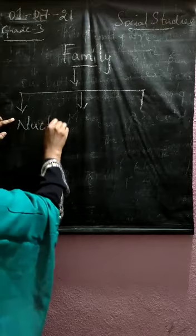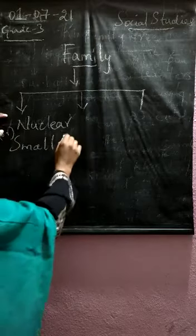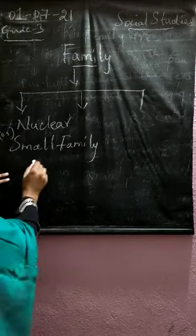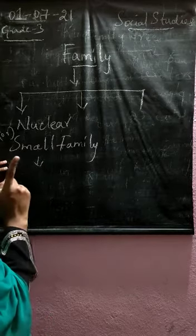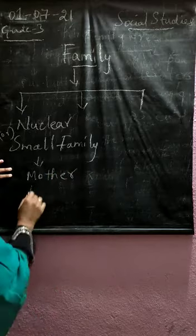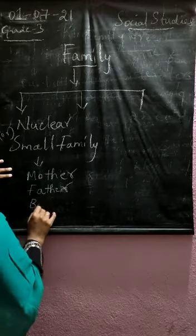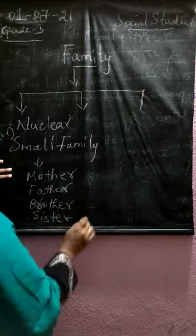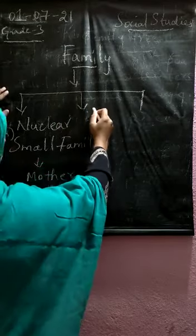The first and foremost is the nuclear family. The nuclear family is also called a small family. In a small family, the members are you, your parents, your sisters, and brothers — maybe only one sister or one brother. It can be categorized as mother, father, brother, sister — two children or one child.